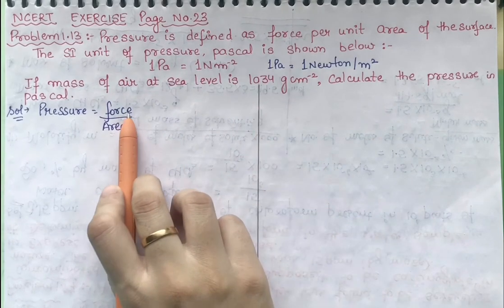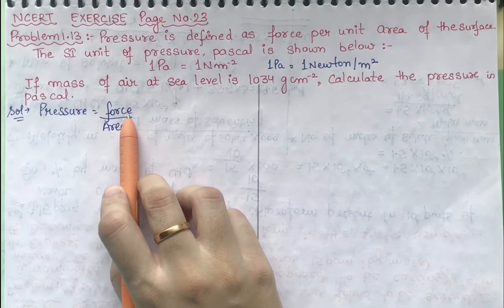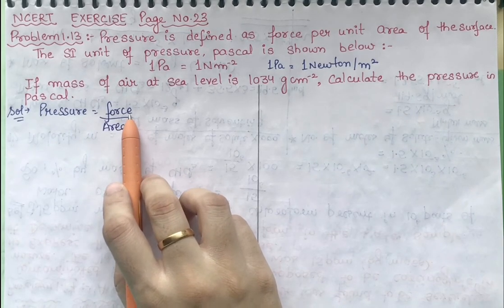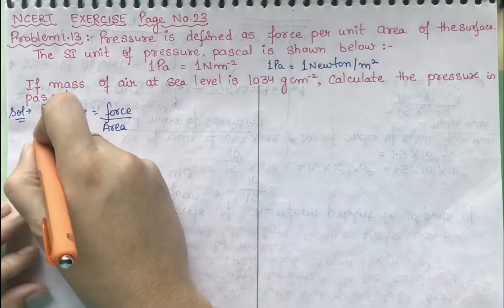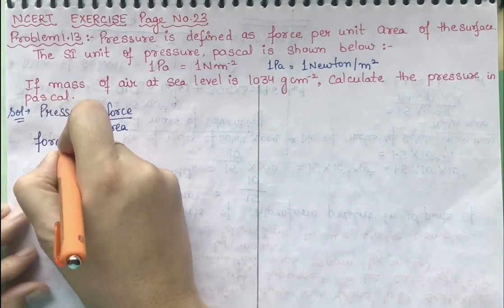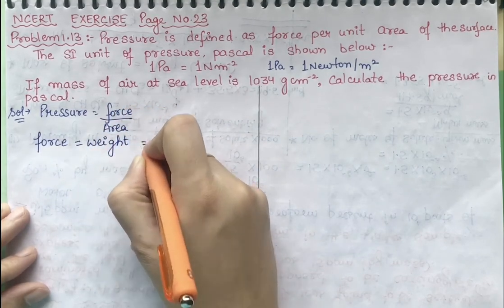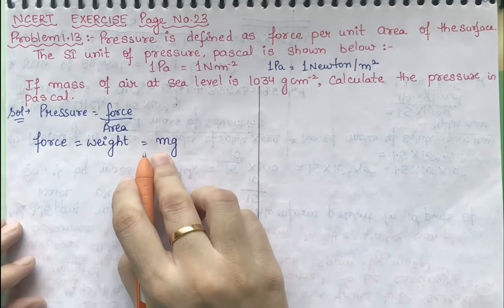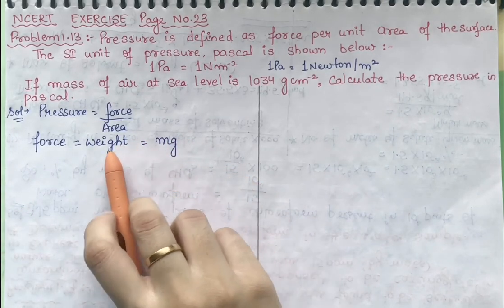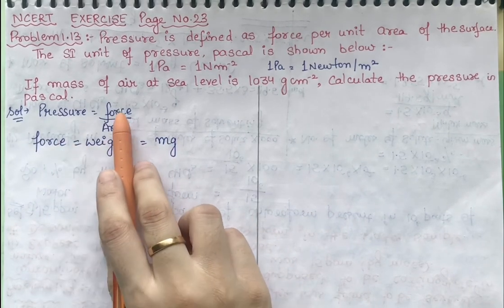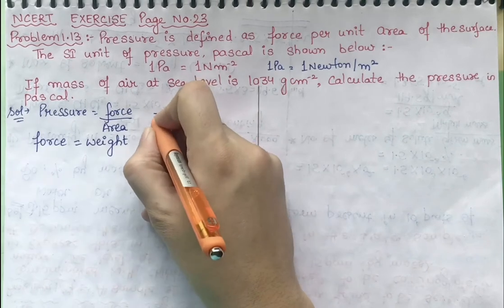After force, which is definitely in Newton, the units don't match. So first we will write force in terms of weight. Force is equivalent to weight because both have the formula mg — m means mass, g means gravity. Since both have the same formula, these two are equivalent.